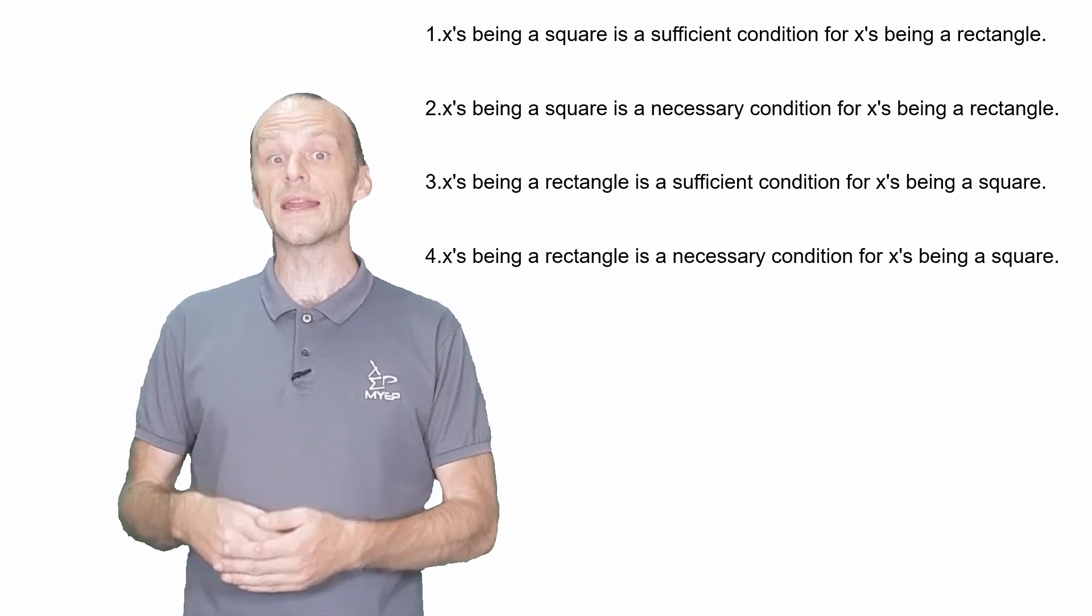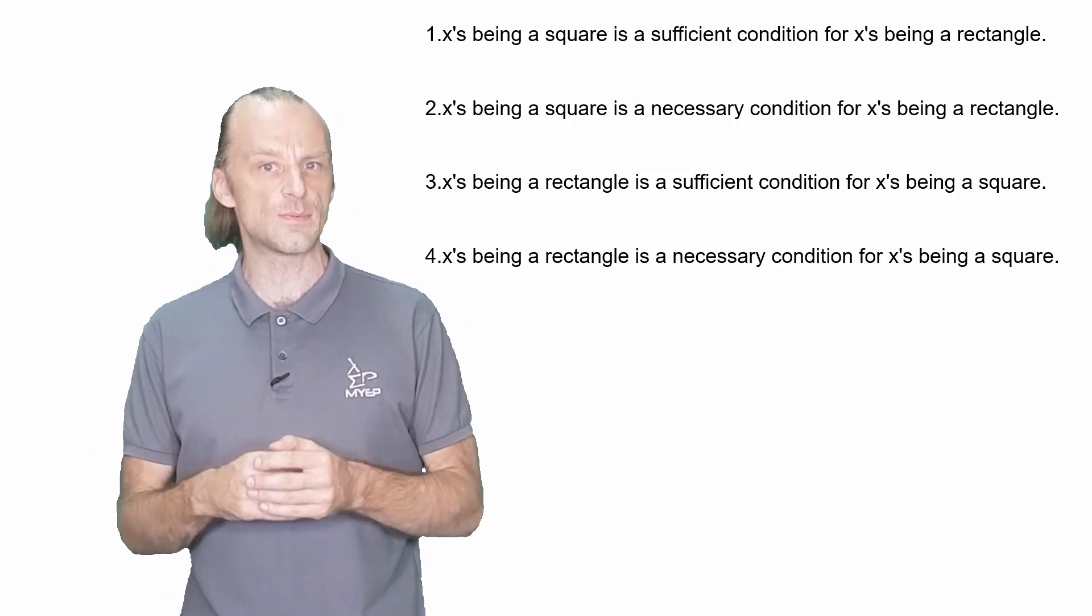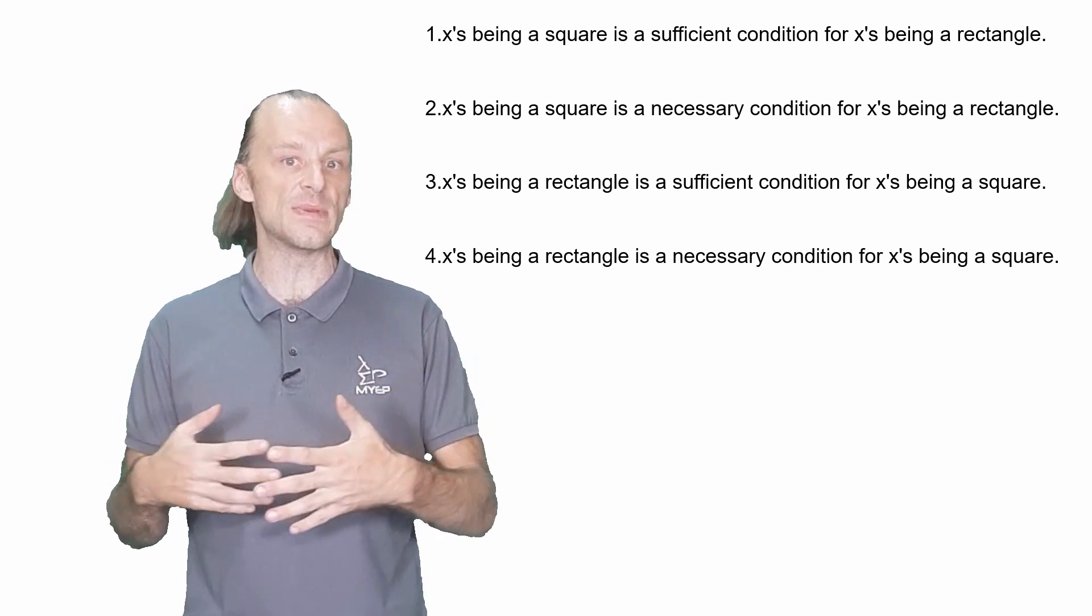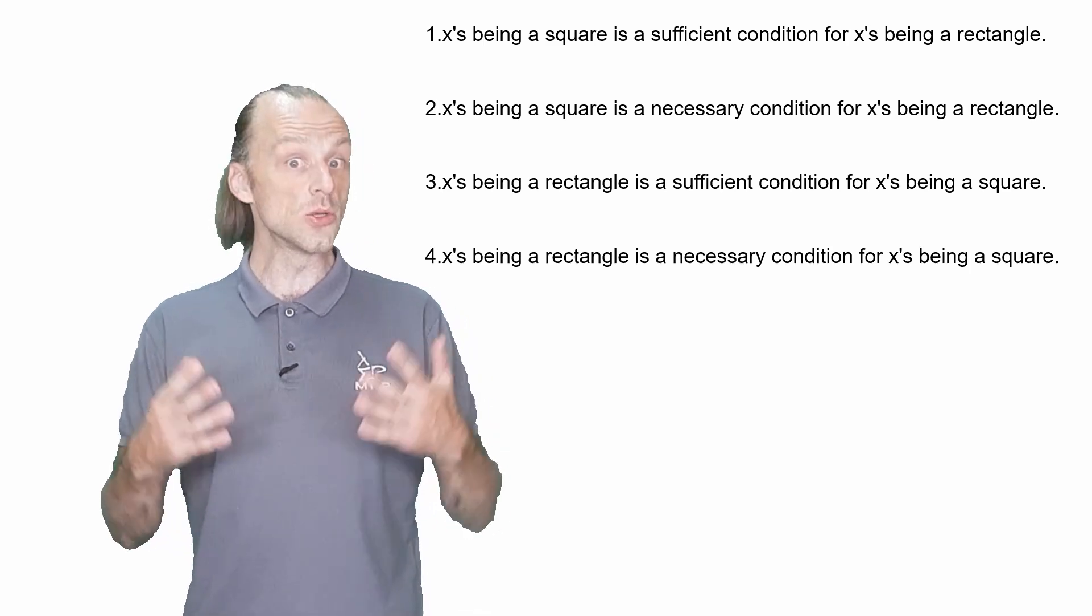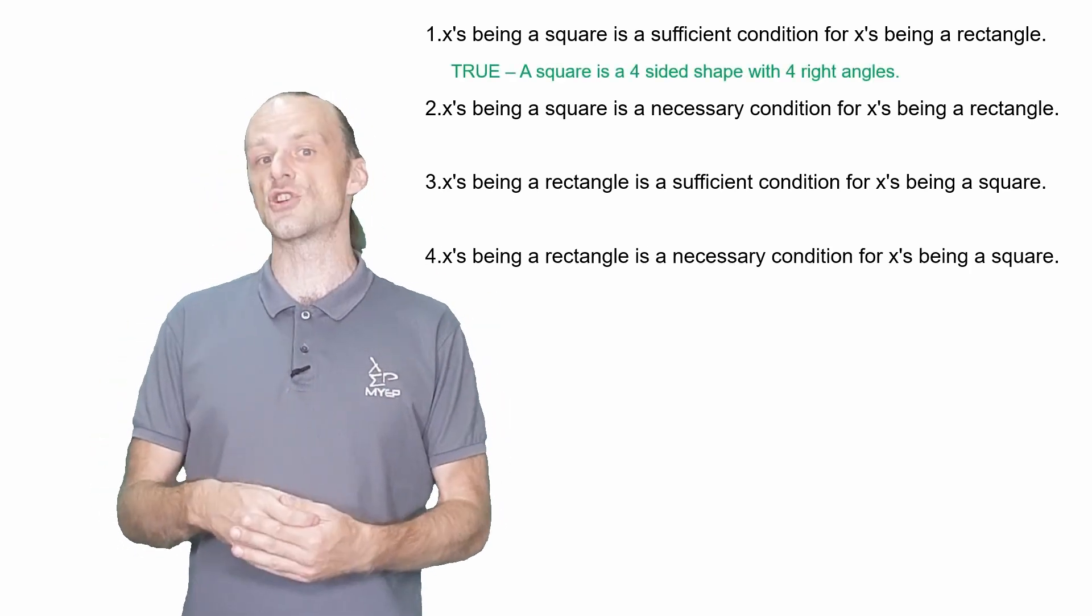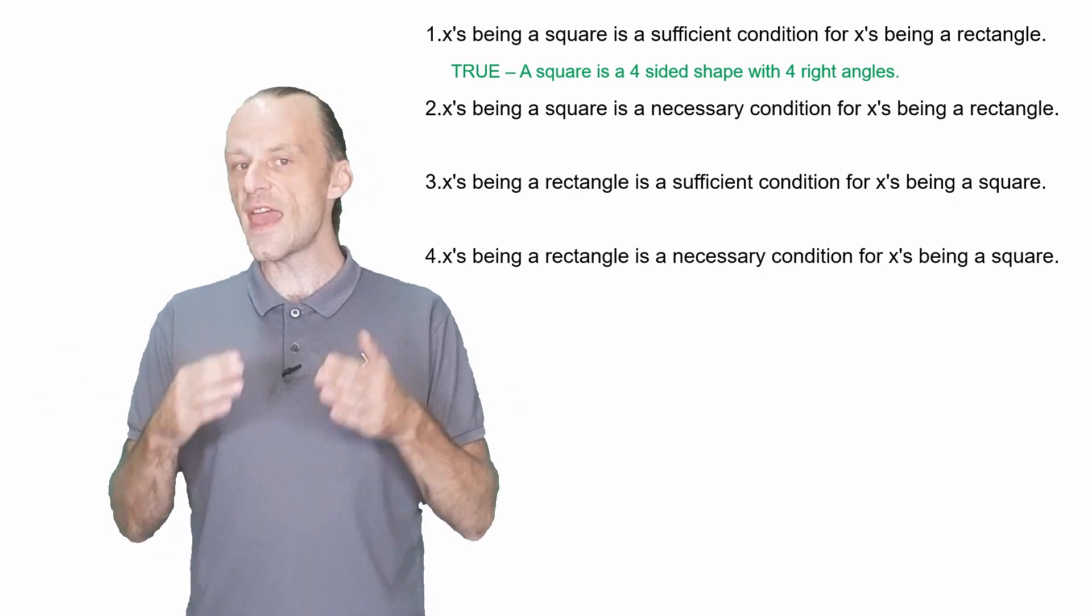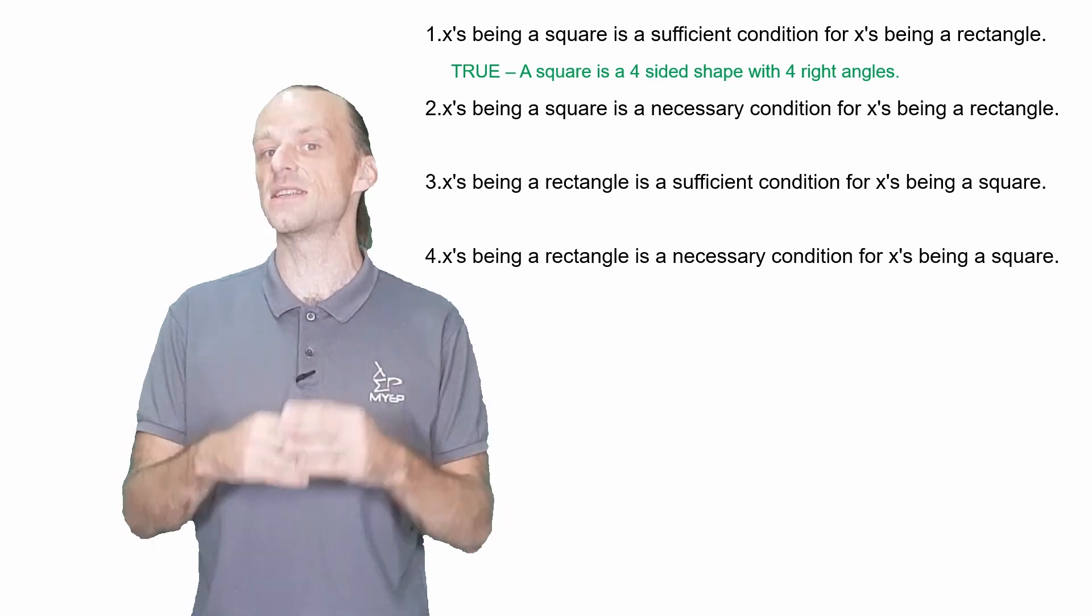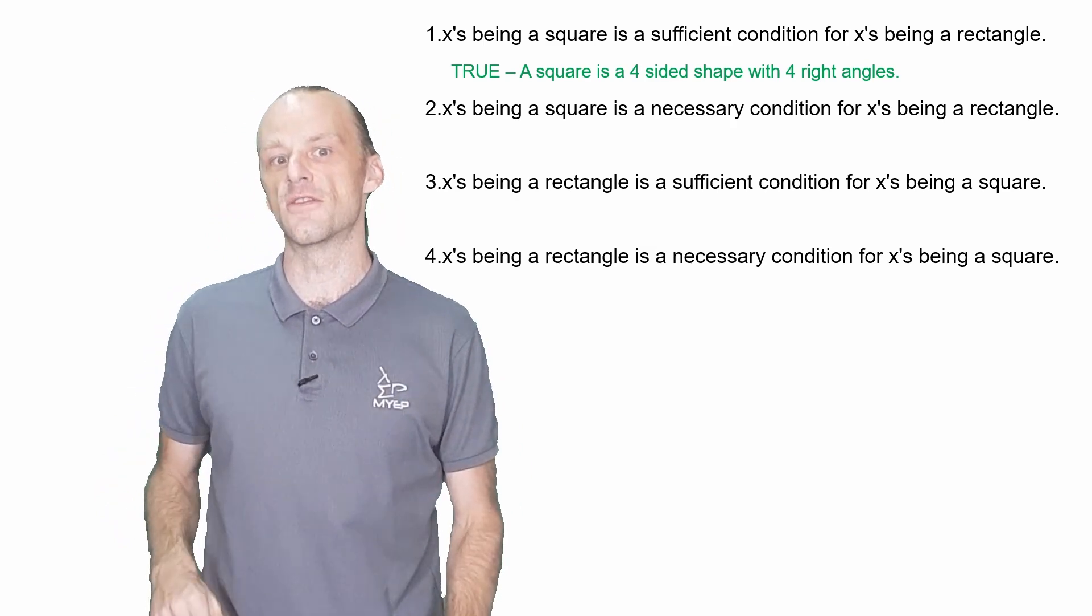Let's start with question one. It says that X being a square is a sufficient condition for X being a rectangle. In these first examples, X is going to be a shape of some kind. Number one is true. All squares also meet the definition of a rectangle, a four-sided shape with four right angles. So if X is a square is true, this guarantees that X is a rectangle is true. So A is a sufficient condition for B.